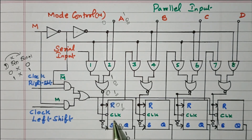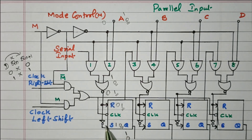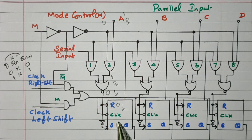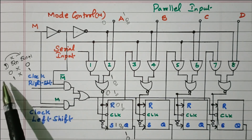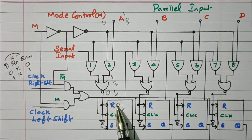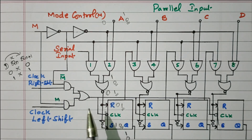Here we are using the SR flip-flop. The R input is directly given and the S input is given with the inverted input. So this SR flip-flop now behaves similarly to the D flip-flop. We'll see how it will transfer data parallelly, and how it will transfer data from left side and right side. We are using the SR flip-flop where the R input is direct and the S input is inverted.